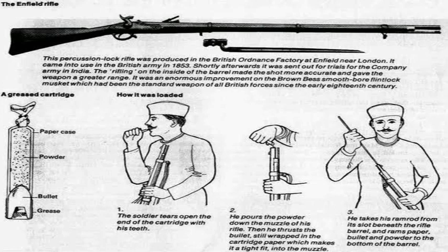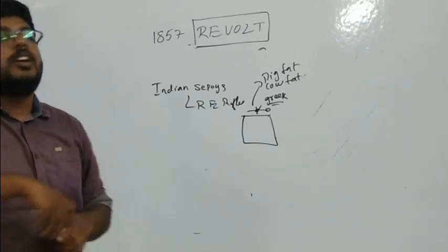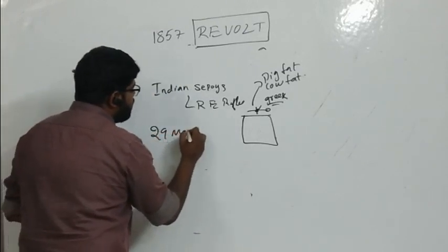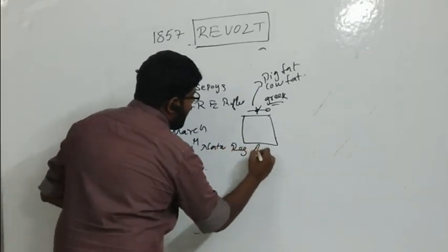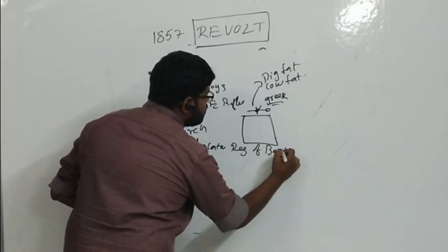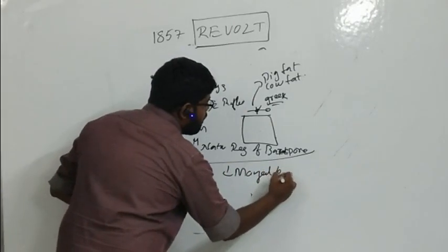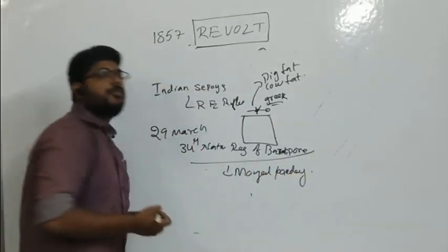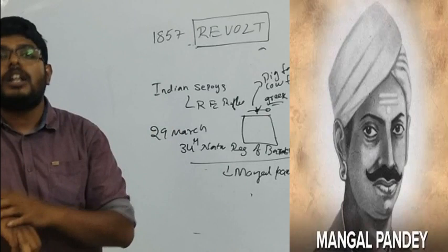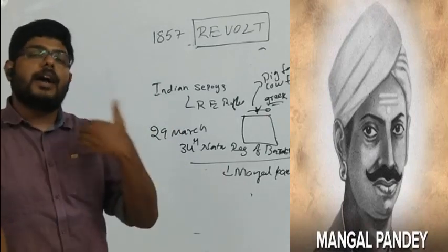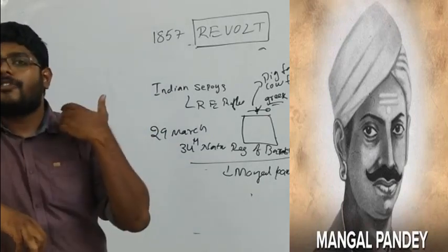Despite both Hindus and Muslims rejecting to use the Royal Enfield rifle, the British military forced Indian soldiers to use it. Aggravated Indian soldiers, on 29th March in the 34th Native Regiment of Barakpur in Bengal, had a person called Mangal Pande. Mangal Pande, vexed by the actions of the East India Company, revolted against the British by shooting his higher official, starting the sepoy mutiny.